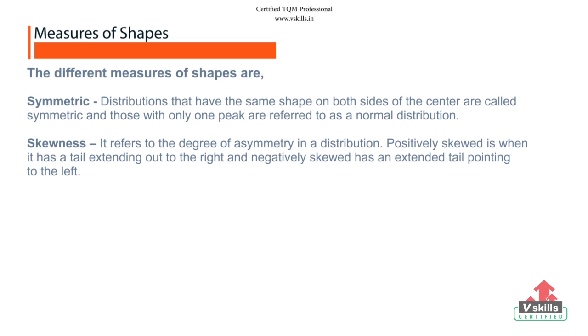For skewness, it refers to the degree of asymmetry in a distribution. Positively skewed is when it has a tail extending out to the right and negatively skewed has an extended tail pointing to the left.